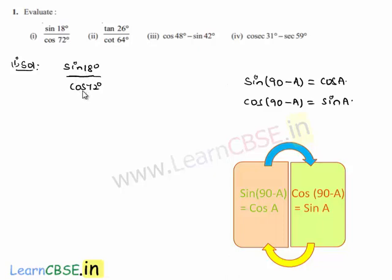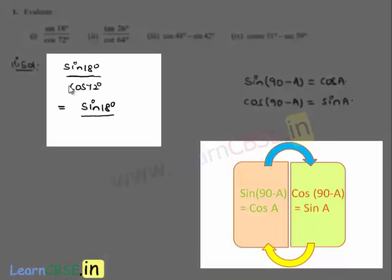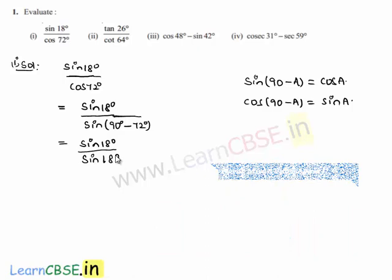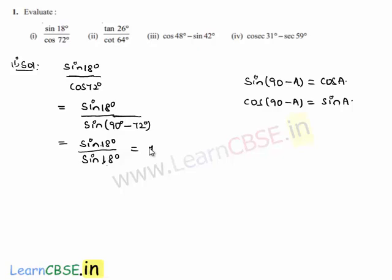So we have in the numerator sin 18 degrees divided by cos 72 degrees. Let us convert the denominator cos 72 degrees in terms of sin: that will be sin of 90 degrees minus 72 degrees, which equals sin 18 degrees. As numerator and denominator are both sin 18 degrees, sin 18 degrees by sin 18 degrees equals 1.